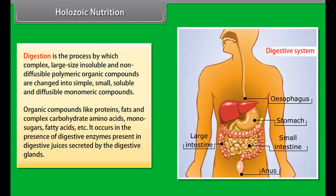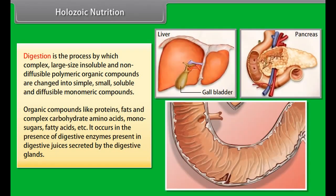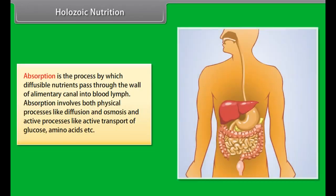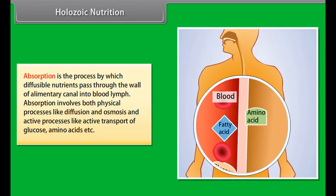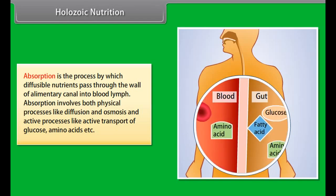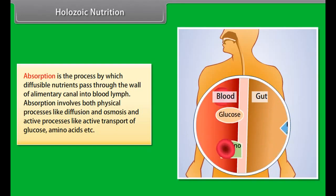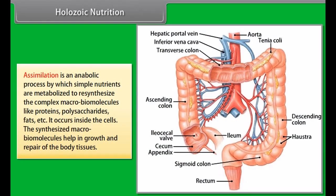Digestion is the process by which complex, large, insoluble, and non-diffusible polymeric organic compounds are changed into simple, small, soluble, and diffusible monomeric compounds. Organic compounds like proteins, fats, and complex carbohydrates are broken down into amino acids, monosugars, fatty acids, etc. Digestion occurs in the presence of digestive enzymes present in digestive juices secreted by the digestive glands.